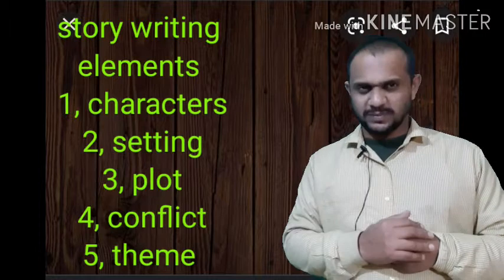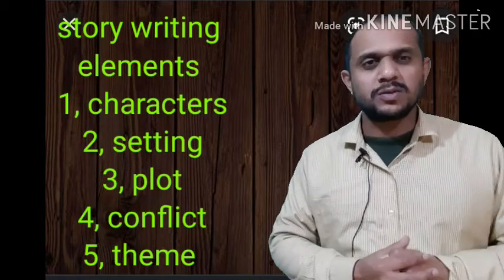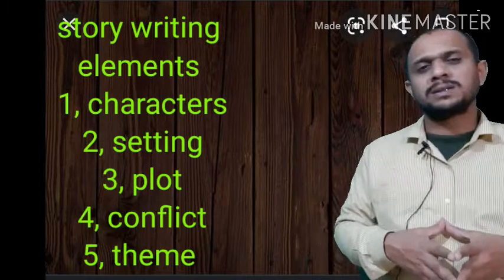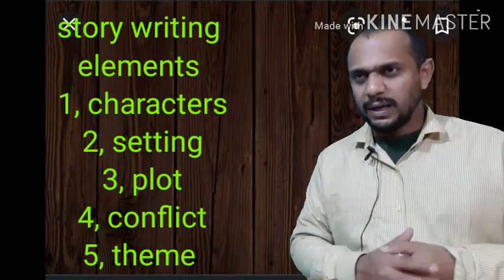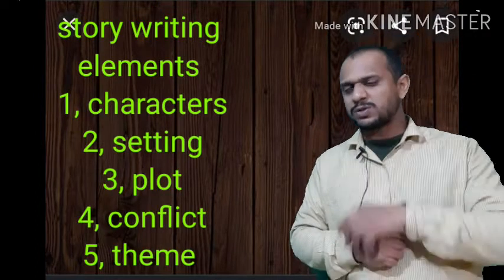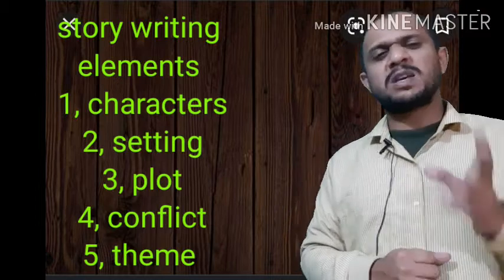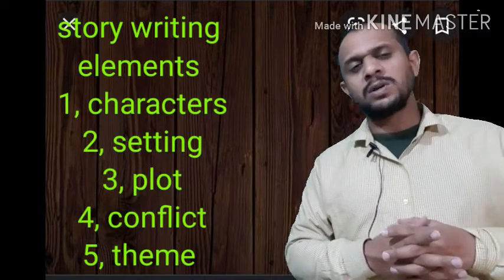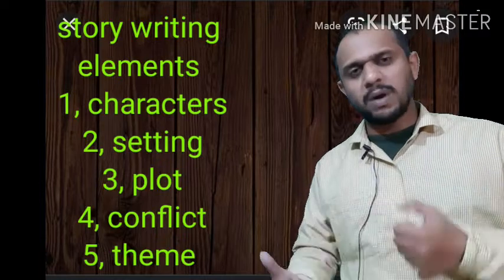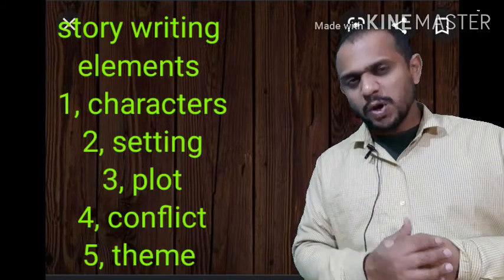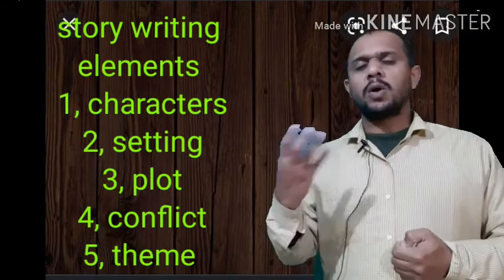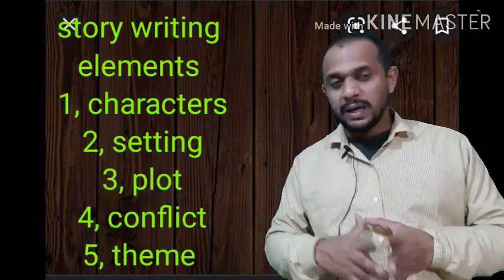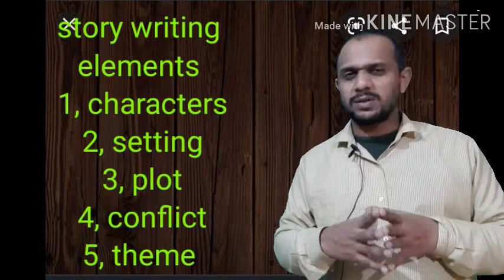Plot is also necessary for making a story. Then, number four: conflict. Conflict should also be there. Conflict makes a story powerful. And number five: theme. Theme is the most important thing — the theme should be impressive, powerful, and strong. On the basis of these elements you can make effective story writing.